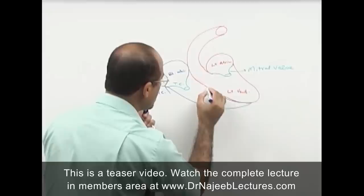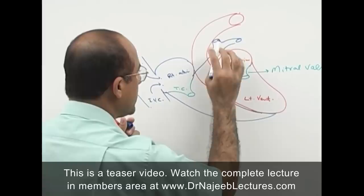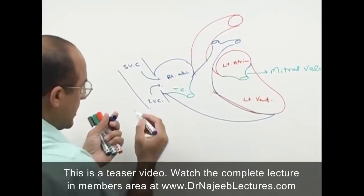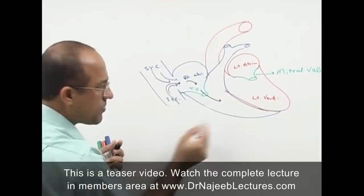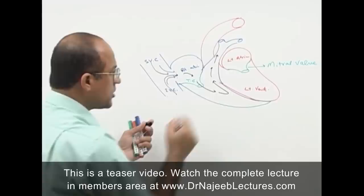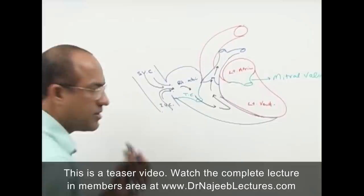From the right ventricle, blood goes out into the pulmonary artery. Blood comes from all over the body through the superior vena cava and inferior vena cava, through the right atrium, through the tricuspid valve to the right ventricle, then out through the pulmonary artery, passing through the pulmonary valve.